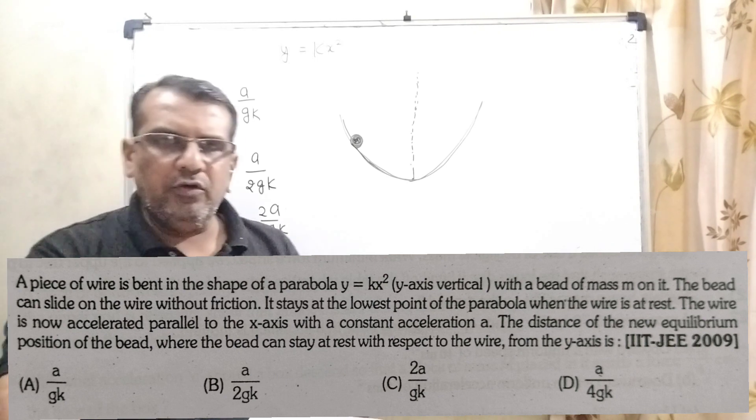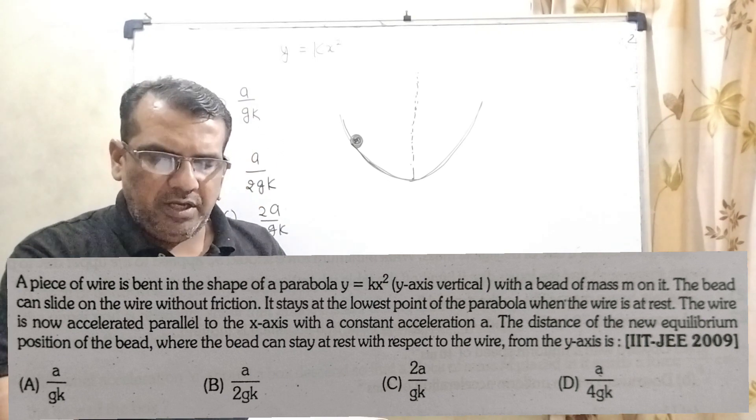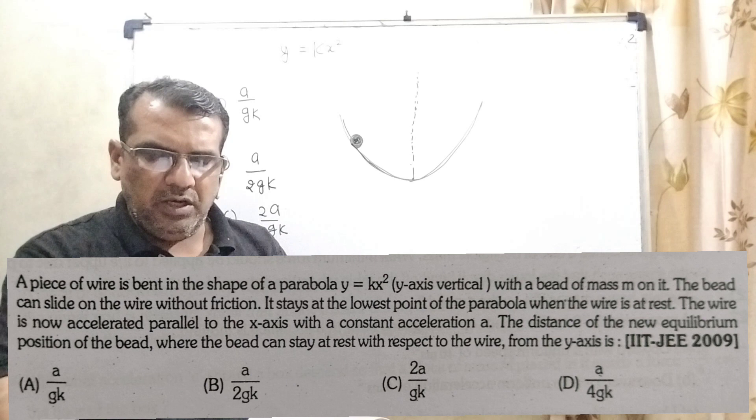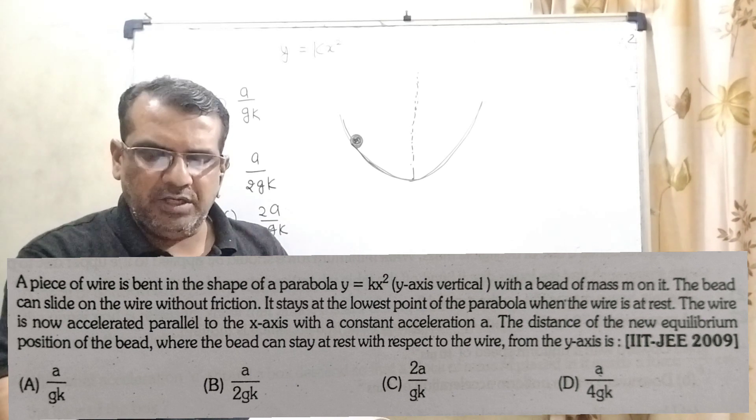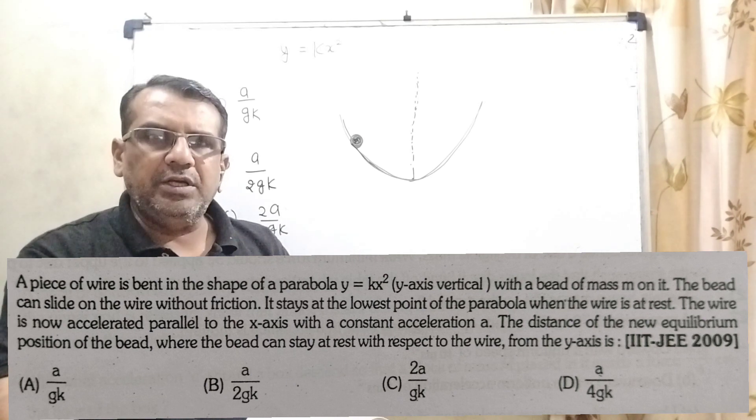Here we have given four options. Option A: a by gk. Option B: a by 2gk. Option C: 2a by gk. Option D: a by 4gk.